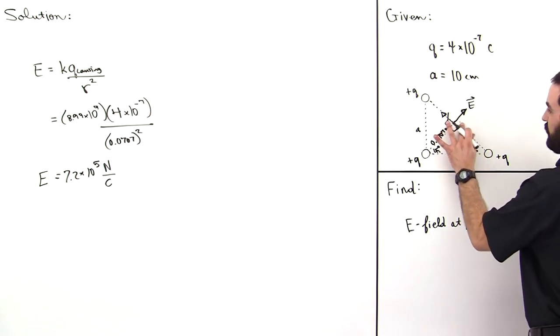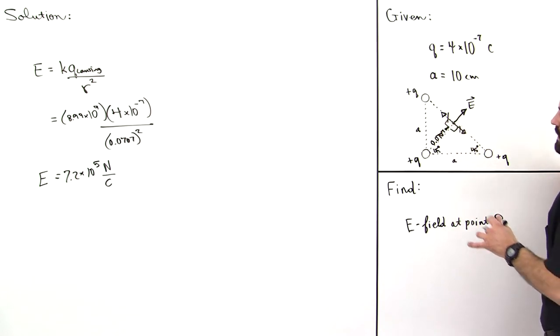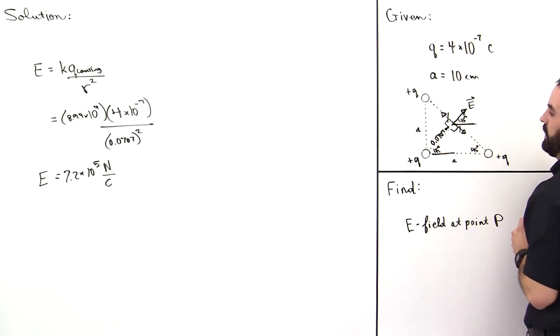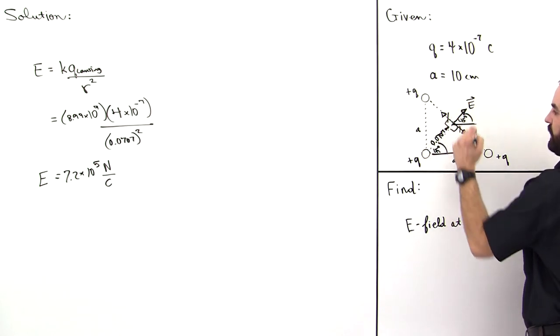Notice, if we take a look at this vector here, this angle is 45 degrees right here, which means that this angle right here is 45 degrees. Because look, this line and this line are parallel with one another, and so this angle is equal to this angle.